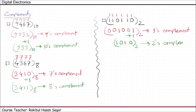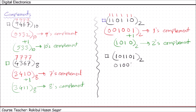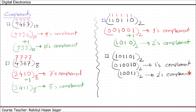For the binary number system, there is an even simpler approach: just convert every 1 to 0 and every 0 to 1, and you get the 1's complement directly. For example, for the binary number 101101, the 1's complement is simply 010010 by flipping all the bits. And if you add 1 with this 1's complement, you will get the 2's complement, which is 010011.